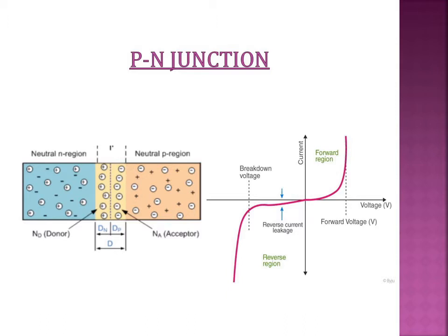It consists of P-type and N-type semiconductors. In P-type semiconductor, we have an excess of holes, therefore holes are majority carriers and electrons are minority carriers in P-type. Whereas in N-type semiconductor, we have excess of electrons, therefore electrons are majority carriers and holes are minority carriers in N-type. So we can say that there exists a concentration gradient across the device.